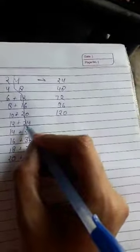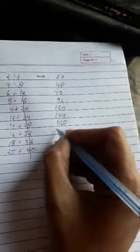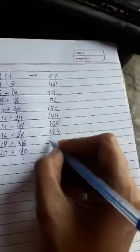12 plus 2 equals to 14, 144, 14 plus 2 equals to 16, 168, 16 plus 3 equals to 19, 192, 18 plus 3 equals to 21, 20 plus 4 equals to 240.